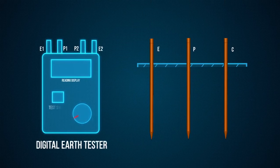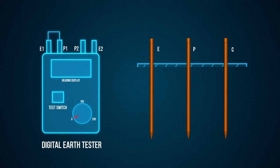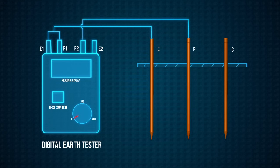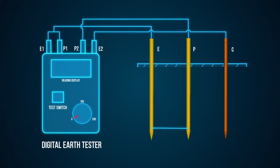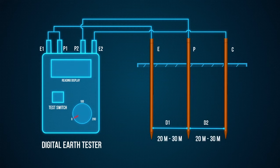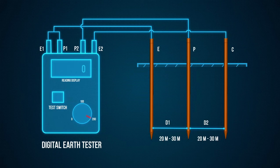Measurement of earth electrode resistance. The digital earth tester has four terminals. Short the terminals E1 and P1 and connect to the earth electrode E whose resistance has to be found. Connect P2 to the potential spike P and E2 to the current spike C. The distance between earth electrode and potential electrode is D1, and D2 is the distance between potential electrode and current electrode. These distances may range from 20 to 30 meters depending upon the soil. Turn the range selector switch to select a proper range for ohm. The digital display will come in action and will read zero. Now press the test switch. The LCD display will indicate the resistance.